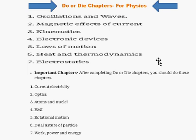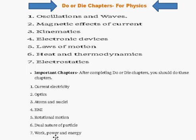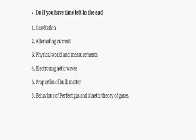Then, if you have time after completing the do or die chapters, you should go to these chapters: Current Electricity, Optics, Atoms and Nuclei, Electromagnetic Induction, Rotational Motion, Dual Nature of Particles, and Work Power and Energy. Then, even if you have more time, you can do Gravitation, Alternating Current, Physical World and Measurement, Electromagnetic Waves.